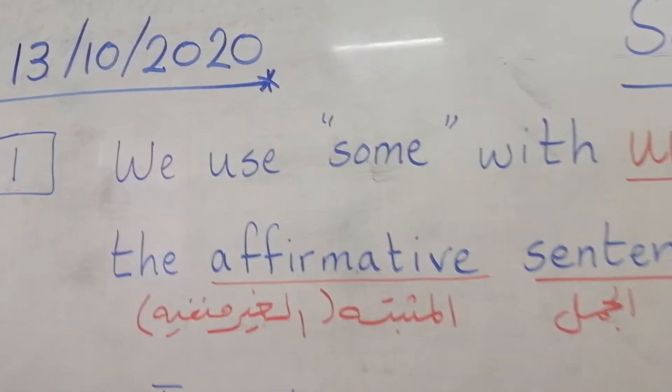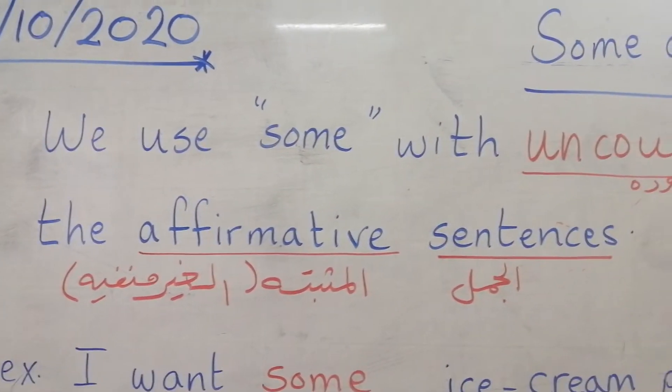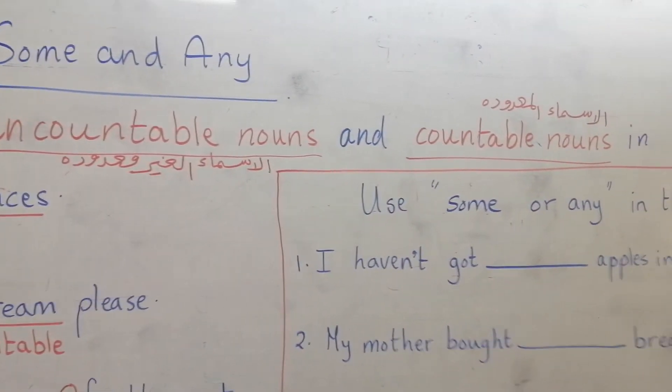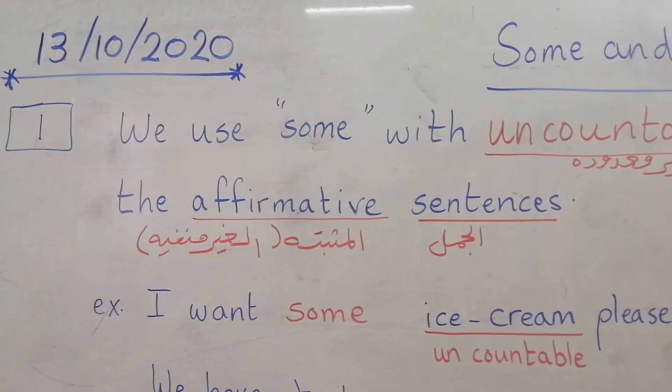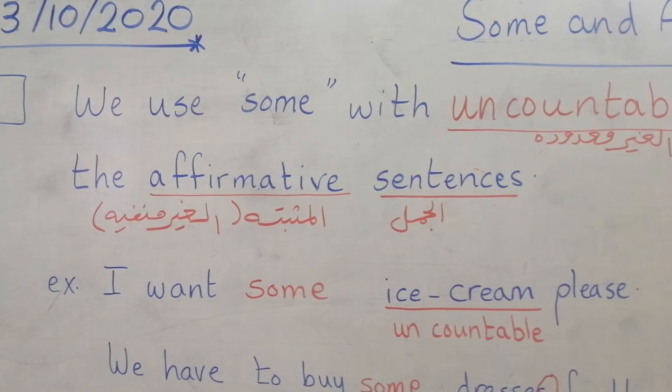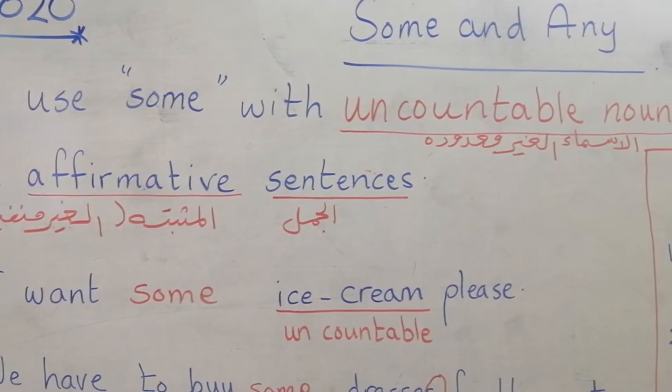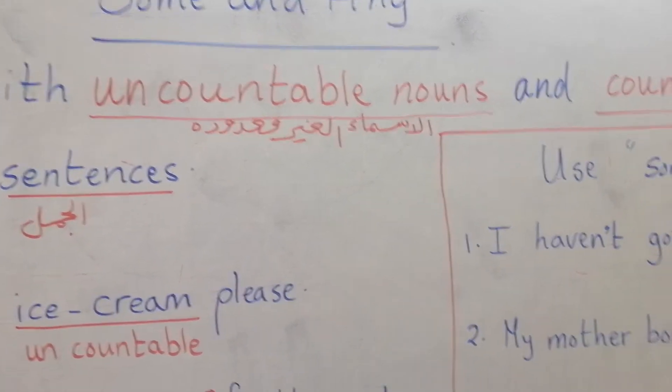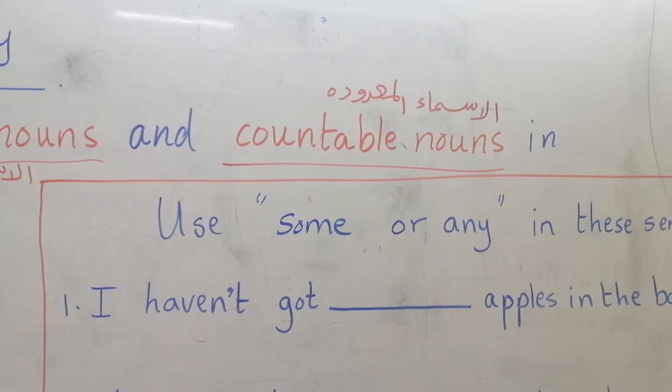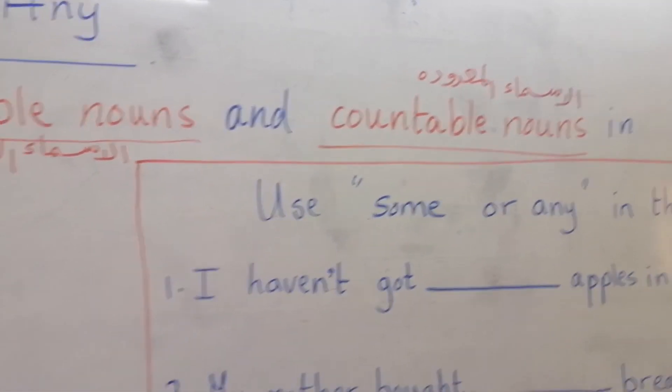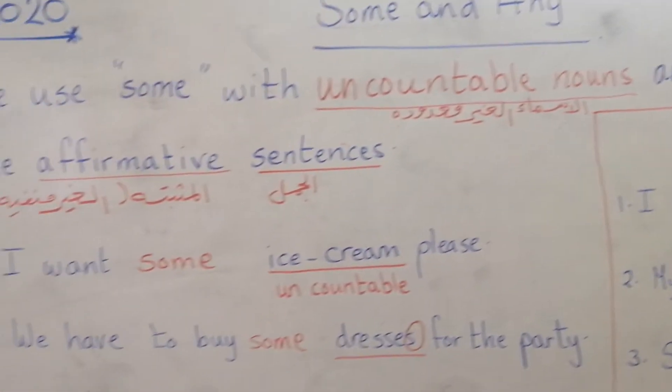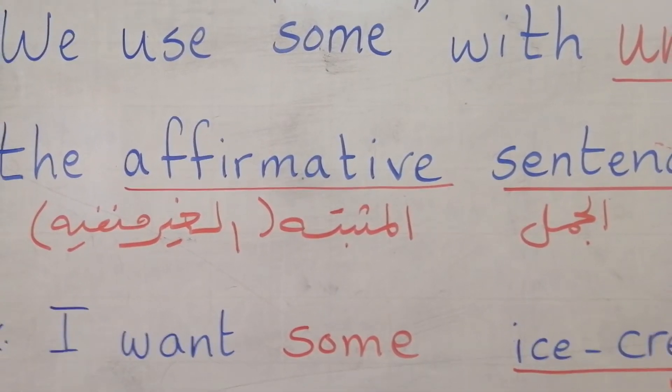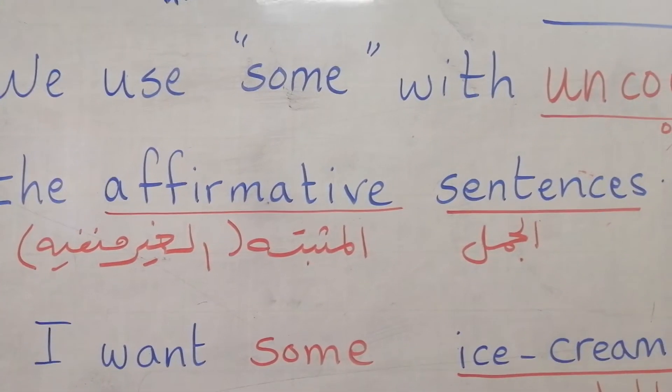First, we will see the use of some. We use some with uncountable nouns and countable nouns in affirmative sentences, like dresses, pens, and elephants. This means in sentences where we don't have not.